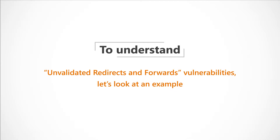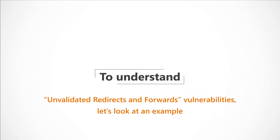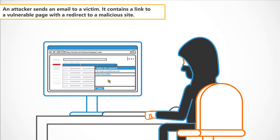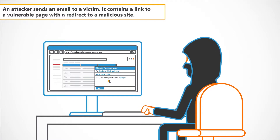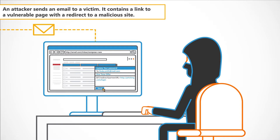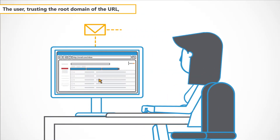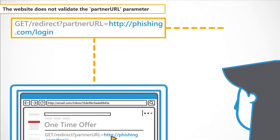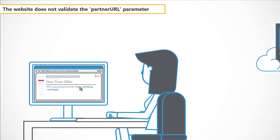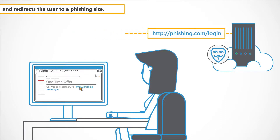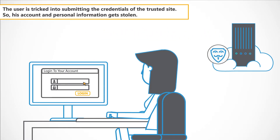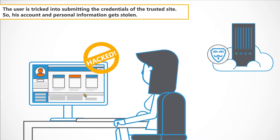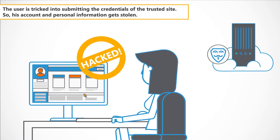To understand unvalidated redirects and forwards vulnerabilities, let's look at an example. An attacker sends an email to a victim containing a link to a vulnerable page with a redirect to a malicious site. The user, trusting the root domain of the URL, clicks on the link. The website does not validate the partner URL parameter and redirects the user to a phishing site. The user is tricked into submitting credentials of the trusted site, so his account and personal information gets stolen.